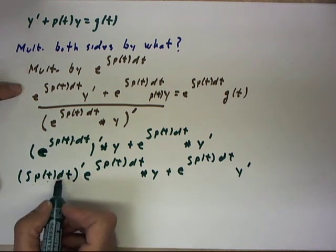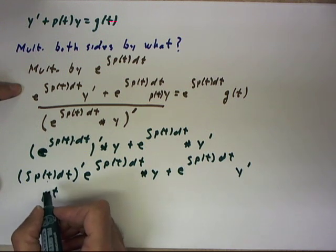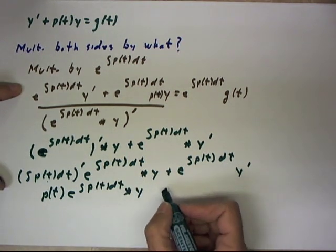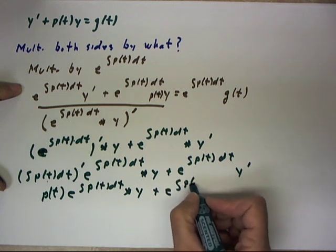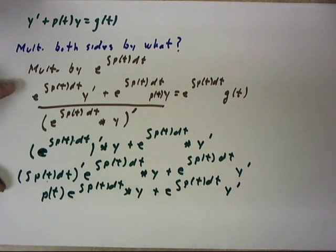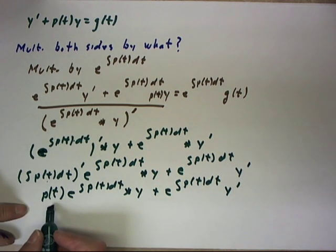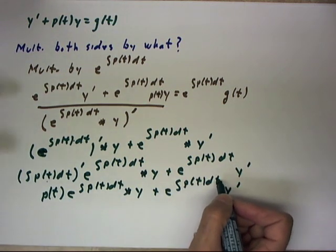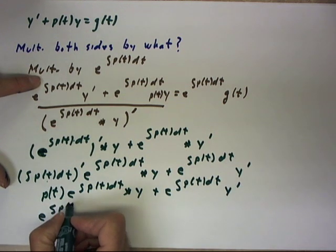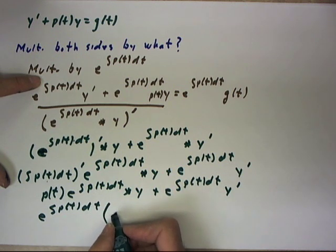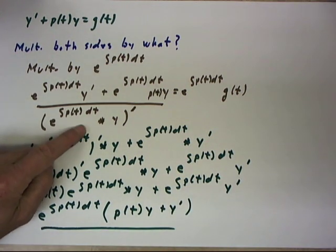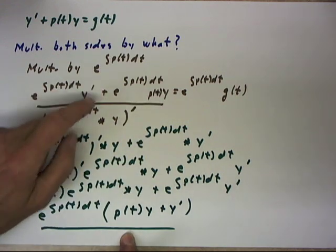Now, the integral of p of t dt prime is just p of t. So we get p of t times e to the integral p of t dt times y, plus e to the integral p of t dt times y prime. Factoring out e to the integral p of t dt, we get p of t times y plus y prime — showing that the derivative of this is indeed the left-hand side of the equation.